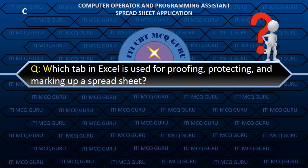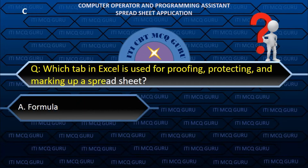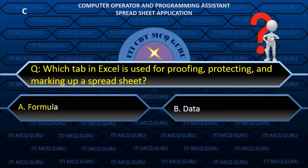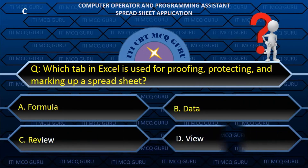Which tab in Excel is used for proofing, protecting and marking up a spreadsheet? C. Review.